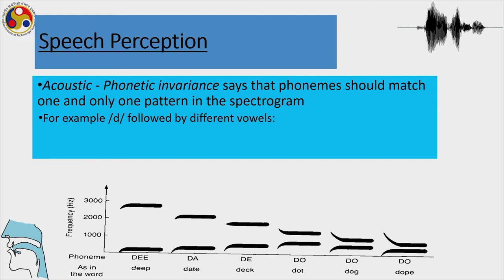Acoustic phonetic invariants say that a phoneme should match one and only one pattern in the spectrogram — each consonant and each vowel will have only one pattern. However, looking at formant transitions for the consonant /d/, you can see transitions starting from 'deep,' 'date,' 'dot,' 'dog,' and 'dope.' In all these different vowel environments, the formants vary greatly — formant transitions are quite different. So the formants themselves will differ, because vowels are determined differently acoustically.